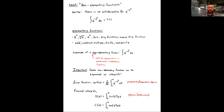The error function, denoted erf(x), has a factor of 2 divided by the square root of pi out front, and inside the integral the lower limit is 0, the upper limit is the variable x, and the integrand is e to the negative t squared. Since e to the negative t squared has no elementary antiderivative, we can't compute this in closed form — the error function must be left defined as this integral. It appears in probability theory and theoretical physics.